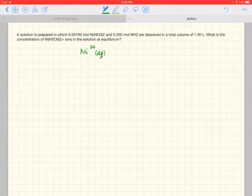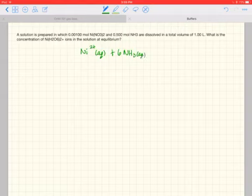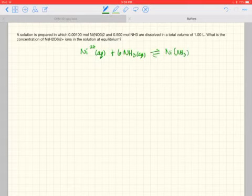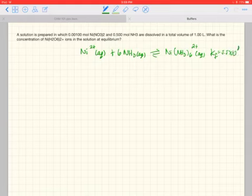Now, a nickel forms a hexa-ammonium complex. And if I look up the value of the formation constant here, it's 5.5 times 10 to the 8th.